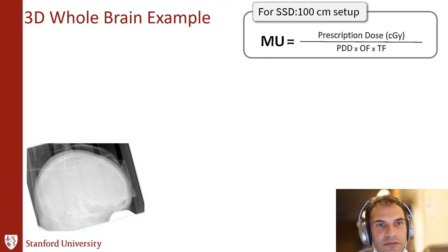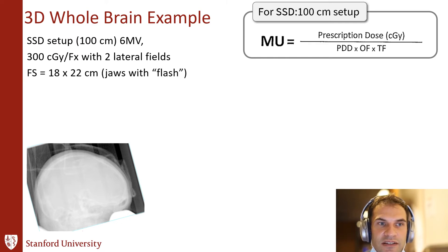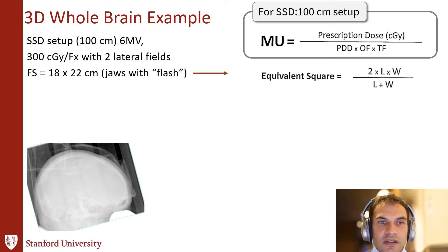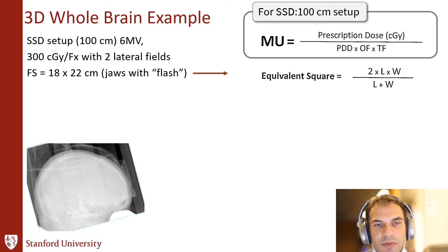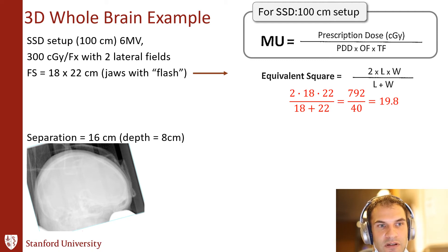Let's go through a 3D whole-brain example MU calculation. We want to treat a whole brain at SSD 100, 6 MV energy, 300 centigray per fraction, two lateral fields, field size 18 by 22 cm. Use the equivalent square formula: 4 times the area over the perimeter, which simplifies to give an equivalent square of 19.8 — a reasonable number between 18 and 22. The patient separation is 16 cm, so the depth to the center where we calculate monitor units is 8 cm.